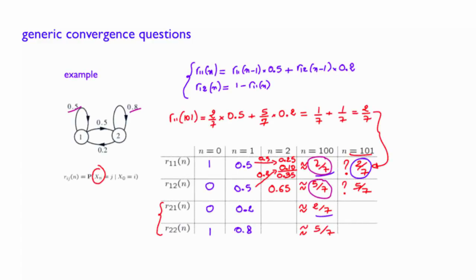We have observed in the simple example from the previous clip that when the Markov chain initially starts in state 1, the probability that it finds itself in state 1 after a long period of time converges to a constant value, in our case 2 over 7.